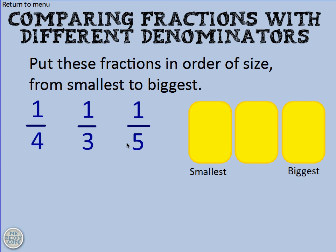Put these fractions in order of size from smallest to biggest. Now this is where all the numerators are the same, but the denominators are different. You might be thinking, from the previous example, well I'll just choose the smaller number and that'll be my smallest, and the bigger number will be my biggest. But we really need to understand what's going on. Let me help you understand by way of another diagram.